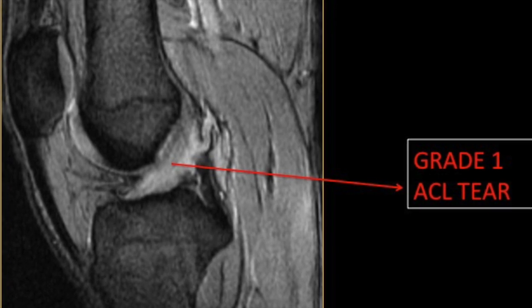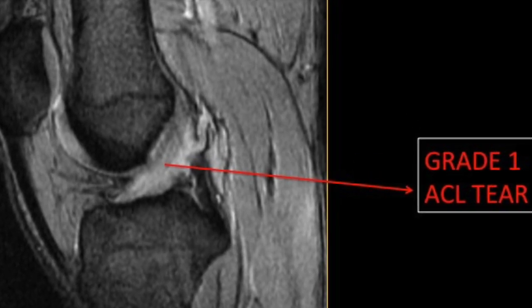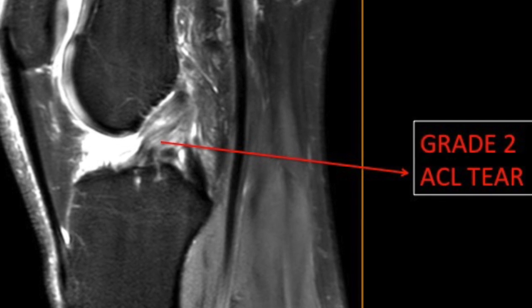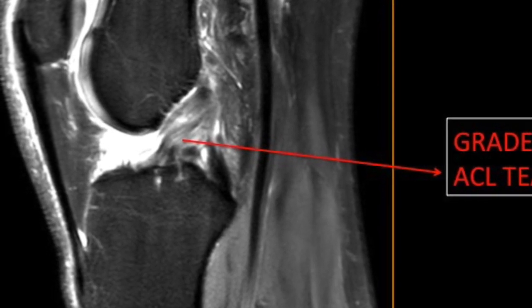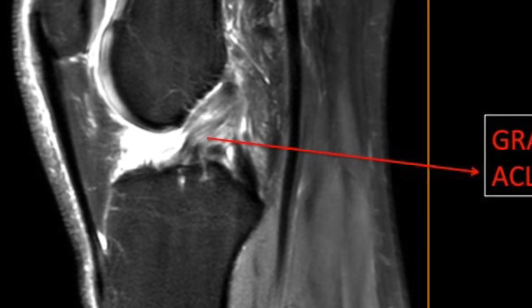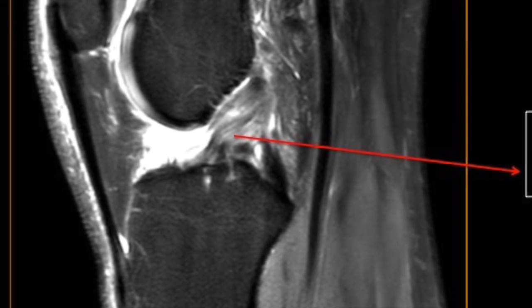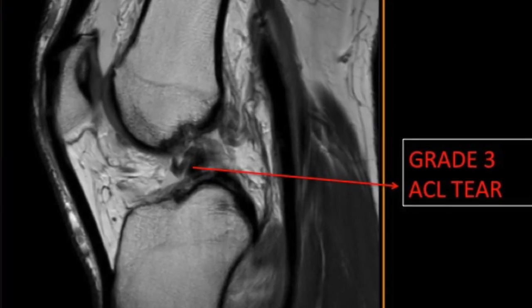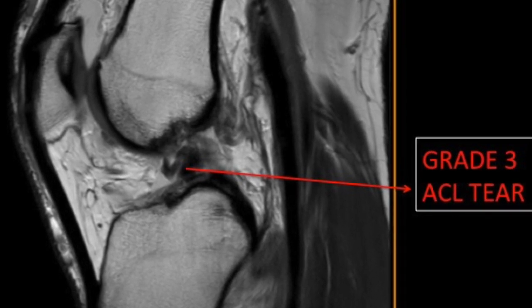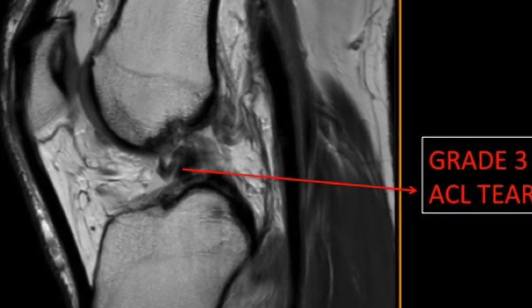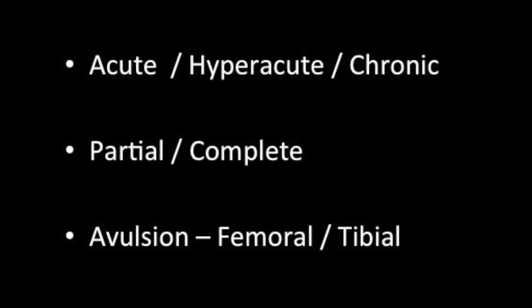This is an edematous ACL — an example of a grade 1 ACL tear. A grade 2 ACL tear shows a partial tear of the anterolateral bundle, where a few fibers are torn and detached from the tibial attachment side. Finally, here there is complete disruption of the ACL. ACL tears can be described as hyperacute, acute, or chronic depending on chronicity. They can be partial tears, complete tears, or avulsion tears from either the femoral or tibial attachment.